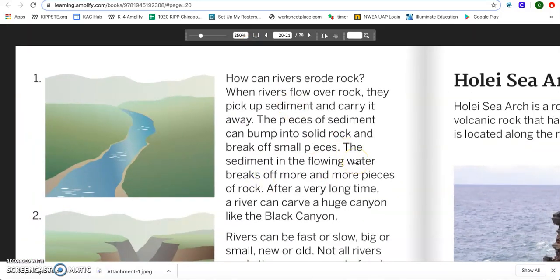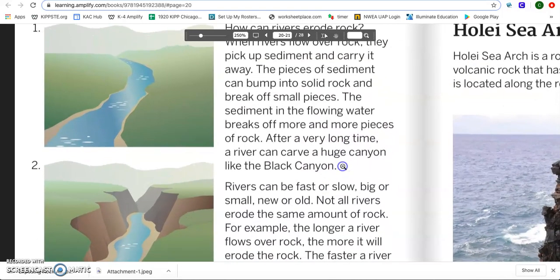How can rivers erode rock? Erode, that's our key vocabulary word. It's the same as erosion. When rivers flow over rock, they pick up sediment and carry it away. The pieces of sediment can bump into solid rock and break off small pieces. The sediment in the flowing water breaks off more and more pieces of rock. After a very long time, a river can carve a huge canyon like the Black Canyon.